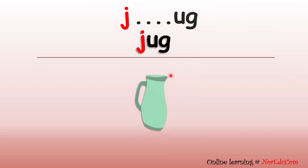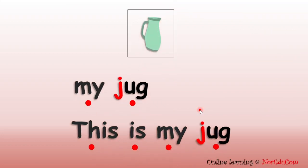Can you name this picture? Yes, that's right. This is a jug. J, J, jug. Repeat after me. J, J, jug. Well done, everybody. Let's read. My jug. This is my jug. Let's read it again. My jug. This is my jug. Well done, everybody.